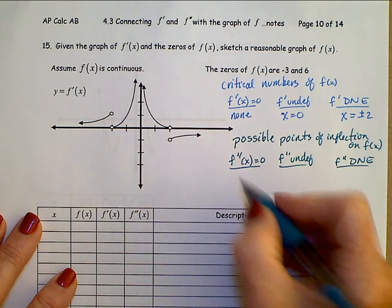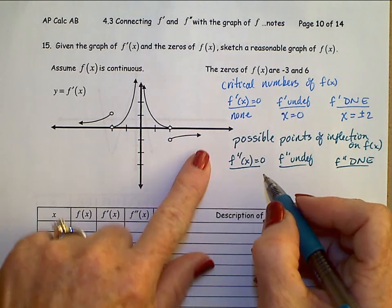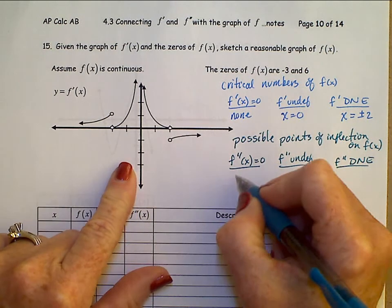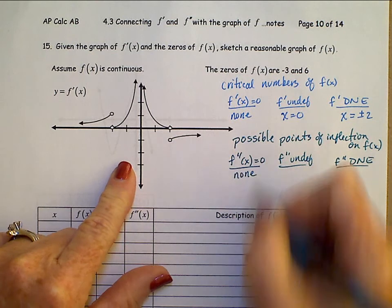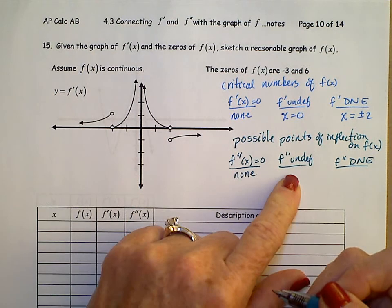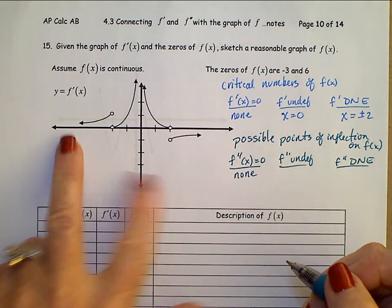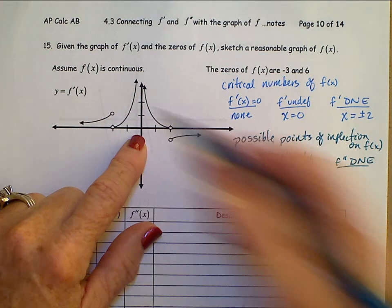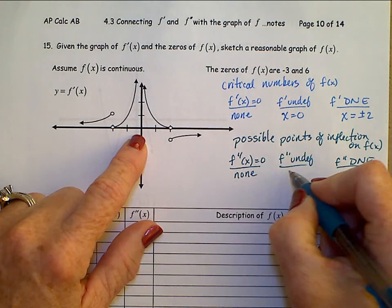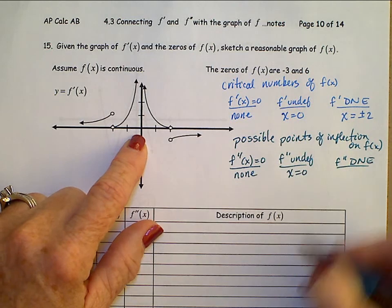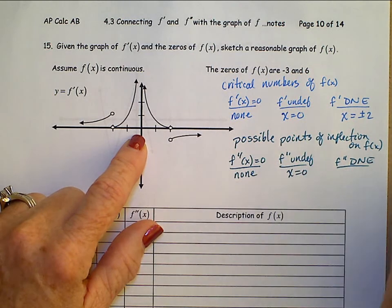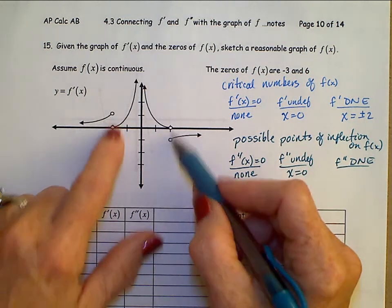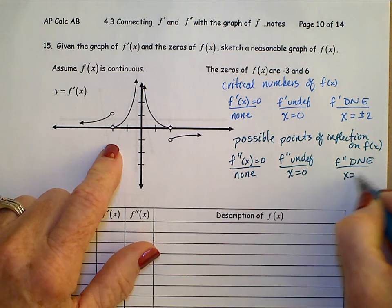f double prime equal to 0 means slopes of tangents on f prime are zero — there are none here. f double prime undefined is where slopes of tangents on this graph are approaching infinity, and that's right here at x equals 0. f double prime does not exist where a tangent line cannot be drawn, and that's at x equals plus or minus 2.